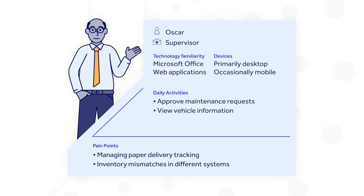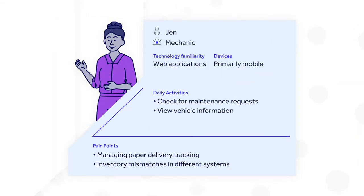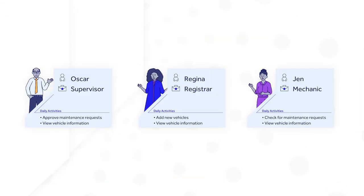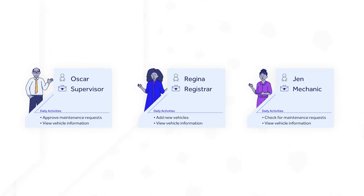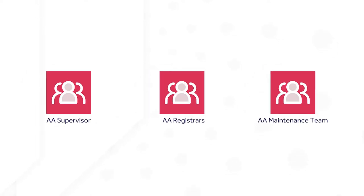The first things to consider are personas and groups. A persona is a representation of a group of people who will work in your application. You'll need to identify who will interact with the application and the key activities that each persona needs to perform. Defining the persona will inform you how the user should interact with the application. Is this going to be the person's only job? Are they going to pop in and out of the application? Are they on the go and using a mobile device? These questions help shape navigation around the application. Defining the activities for each persona will also help you define groups, which are used to configure security in an application.